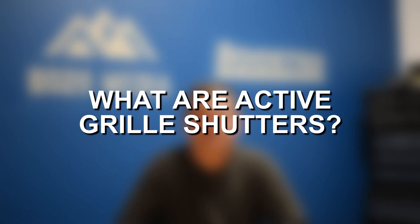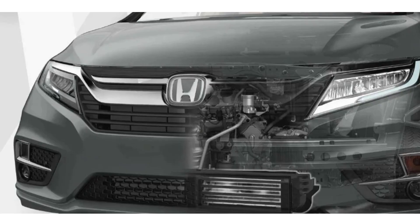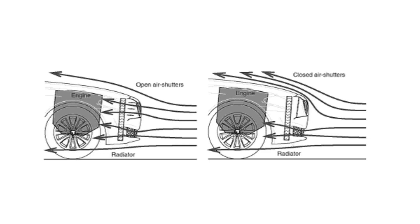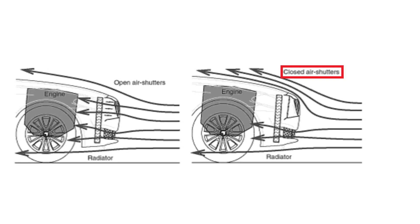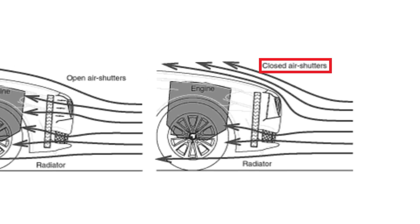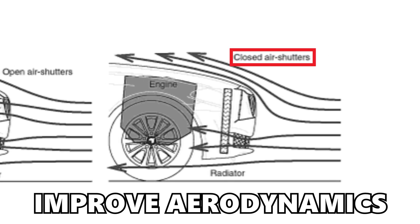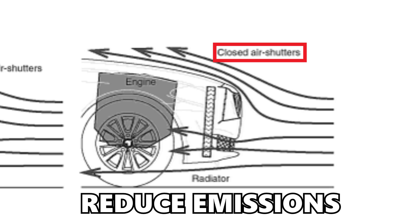So what are active grill shutters? They're a fairly straightforward component that are mostly non-essential to engine performance and drivability. Essentially it's just a few little slats behind your front grill that will open and close to control airflow over the surface of the radiator. The main purpose is that at higher speeds, when you already have good airflow and proper cooling, those shutters can close to block off airflow and improve aerodynamics, and therefore fuel economy and reduce emissions.